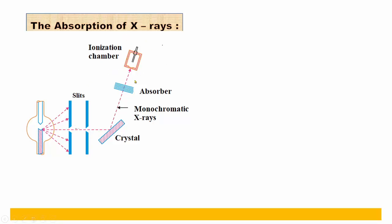As the x-ray beam passes through the slits and is incident on the crystal, it is reflected towards the ionization chamber. In the first condition, when the absorber is absent, the reflected beam directly enters the ionization chamber through the window. The gas inside ionizes, and the amount of ionization is measured with the help of the electrometer.